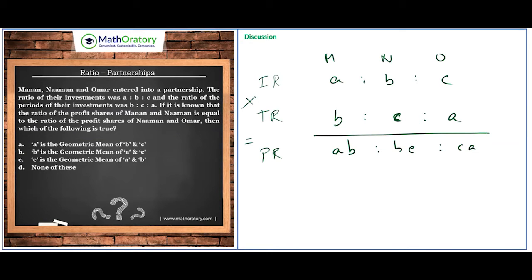There is something additionally mentioned: that the ratio of profit shares of Manan and Naman is equal to the ratio of profit shares of Naman and Omar. So these two total is equal to these two total. We are simply treating these as the values. So essentially, sorry, not the total—the ratio. The ratio of Manan to Naman is equal to the ratio of Naman to Omar.